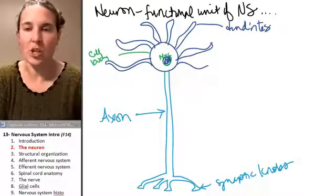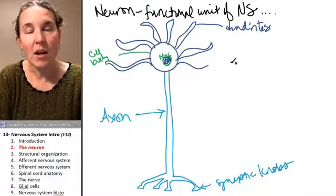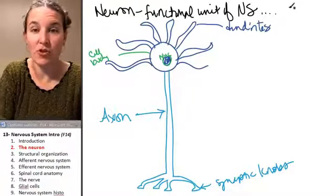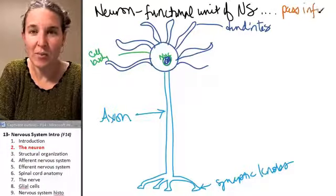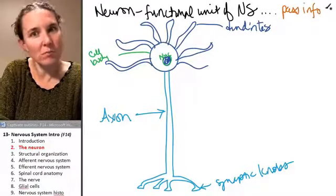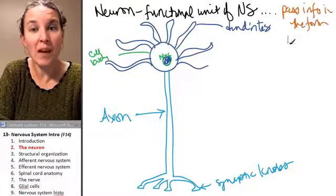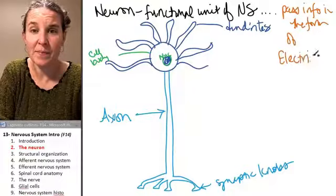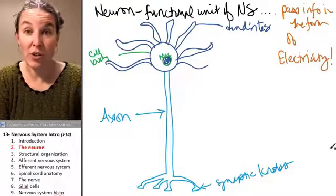And watch and be amazed. Dendrites, the neuron as a whole, is essentially an electric structure. It can pass, that's the worst color I've ever picked, so I'm going to collect info in the form of, ready for this, electricity.